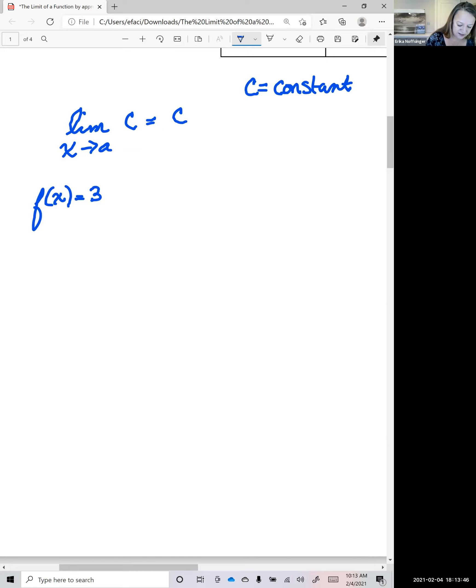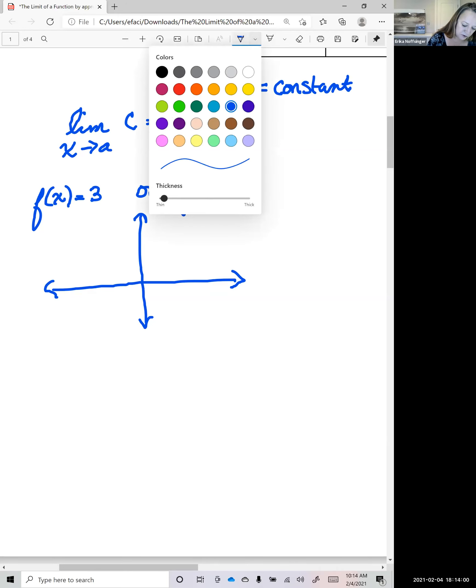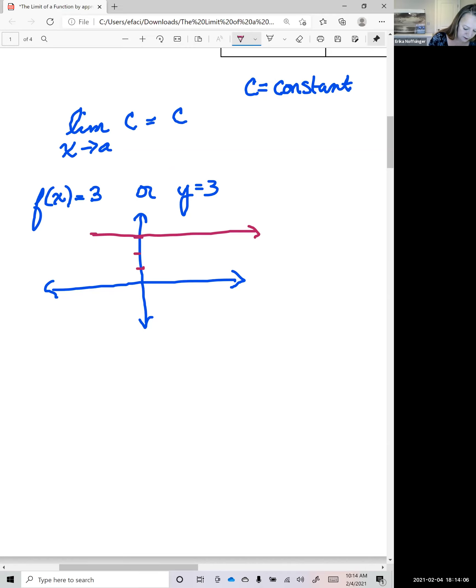Another way to write that, remember, is Y equals 3. So if you recall, the graph of Y equals a constant is a horizontal line through that number. And so in this case, Y equals 3, we're going to just go up 3, and it's a horizontal line through 3. And this is what the graph looks like.